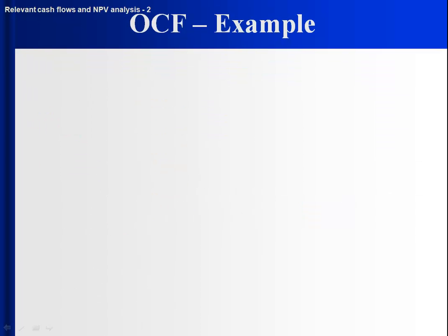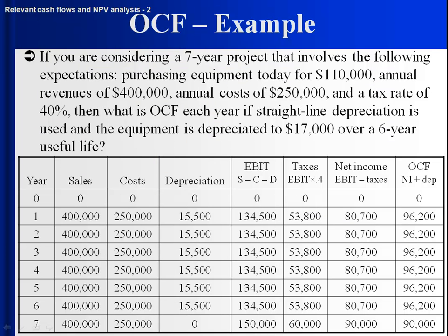Let's take a look at this one first. We've got to find depreciation. Depreciation is equal to the amount you bought the equipment for — $110,000 — minus the amount it's depreciated to — $17,000. So $110,000 minus $17,000 gives a total of $93,000, and we spread that out evenly over 6 years. Each year depreciation is $15,500 for years 1 through 6. Since it's a 7-year project, depreciation in year 7 is $0.